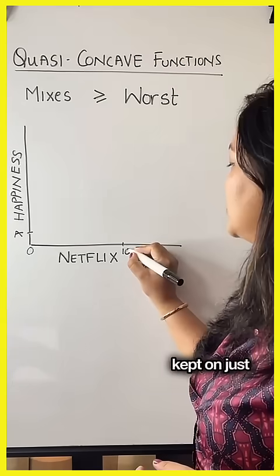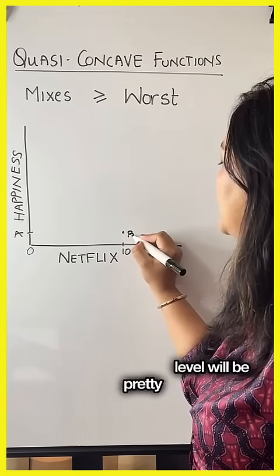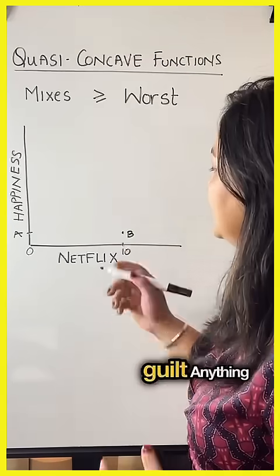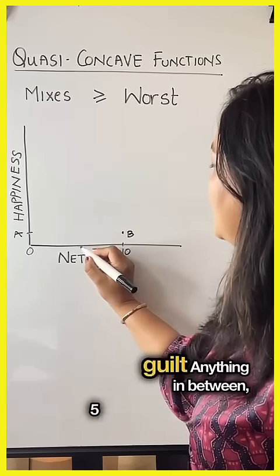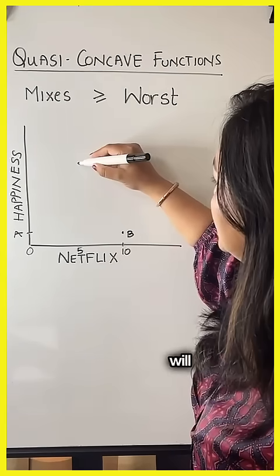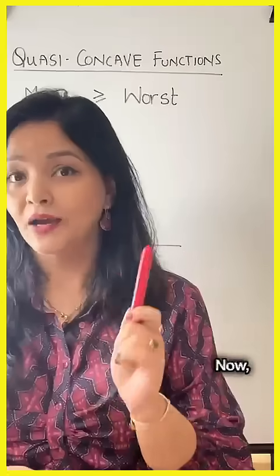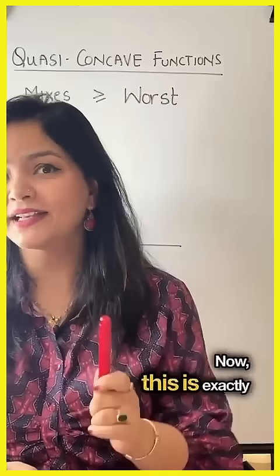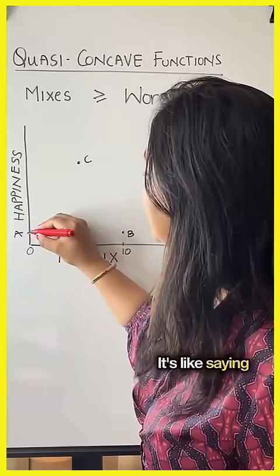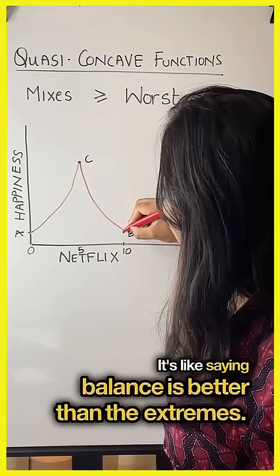And suppose you kept on just watching Netflix. Again, your happiness level will be pretty low because you will have that procrastination guilt. Anything in between — five hours of study, five hours of Netflix — will give you the peak amount of happiness that you can have. This is exactly the idea behind a quasi-concave function: happiness is better at the middle than at the extremes.